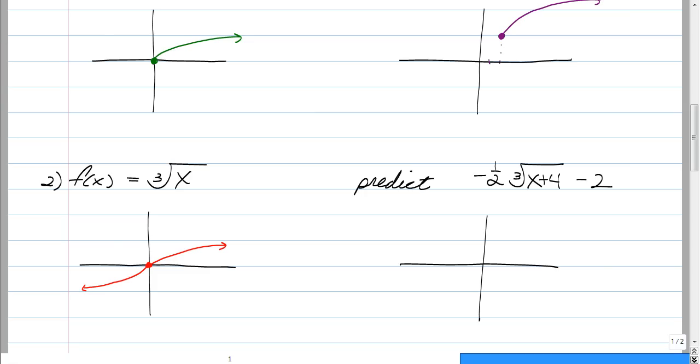So this next example, we're just going to predict what's going to happen. So we have a cube root of X plus 4 and then minus 2. So we can predict that our vertex, or starting point, shall we say, is at negative 4, negative 2.